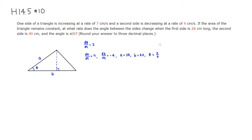Let's find the area. The area is base times height, where the height is a times sine of theta. So the area equals one half a·b·sine(theta). To simplify, multiply both sides by 2, giving 2A = a·b·sine(theta).